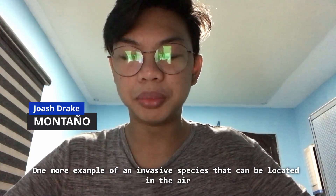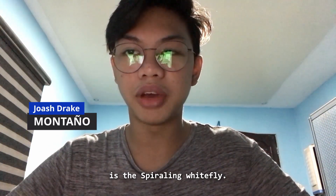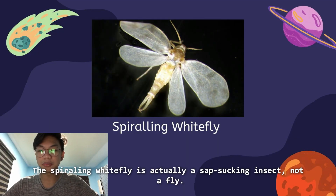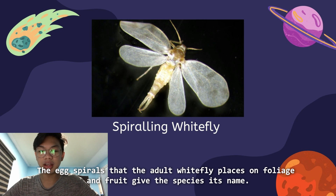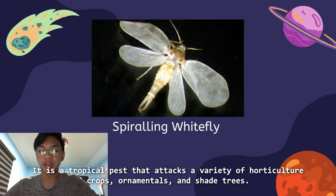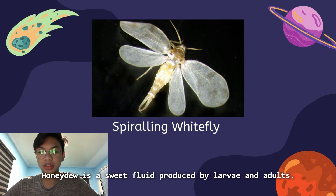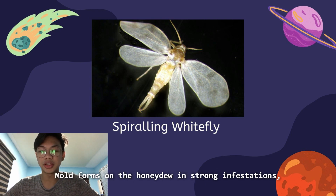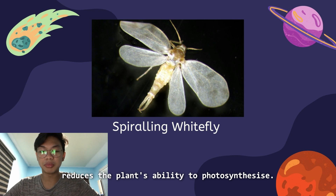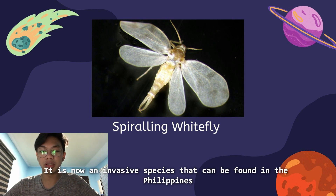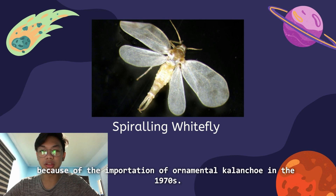Another example of an invasive species is the spiraling whitefly, which can be located in the air. The spiraling whitefly is actually a sap-sucking insect, not a fly. The egg spirals that the adult whitefly places on foliage and fruit give the species its name. It is a tropical pest that attacks a variety of horticulture crops, ornamentals, and shade trees. Whiteflies feed on the undersides of leaves, producing a sweet fluid called honeydew. In strong infestations, mold forms on the honeydew, giving leaves a dark sooty look. Sooty mold, in combination with leaf damage, reduces the plant's ability to photosynthesize. It became an invasive species in the Philippines due to the importation of ornamental kalanchoe in the 1970s.